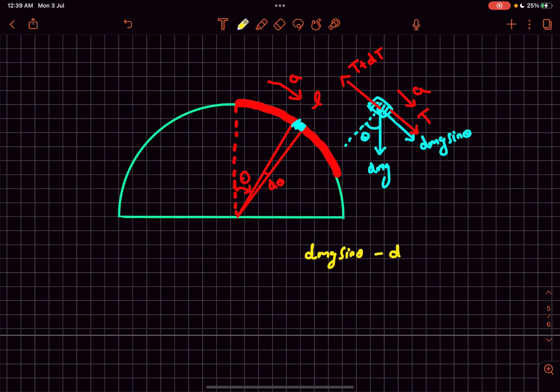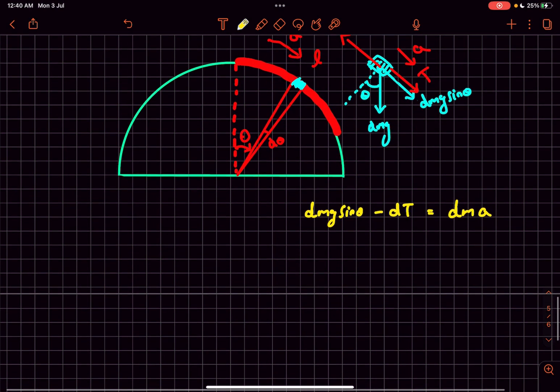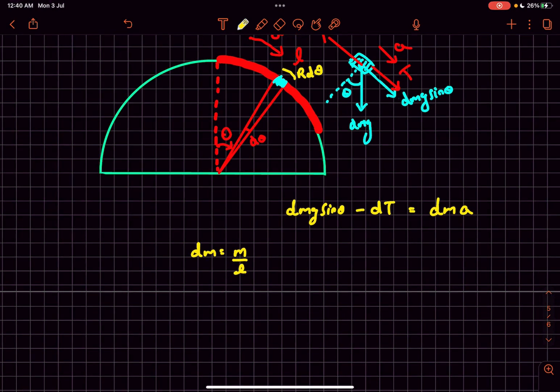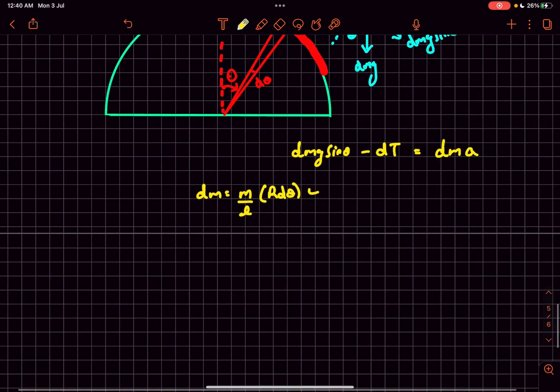We can write dm·g sin(theta) minus dT equals dm multiplied by a. As this rope is uniform, the length of the small blue element is r multiplied by d theta. So dm of that small mass is the mass per unit length, which is m/l, multiplied by the length r·d theta. Now substituting this into this equation...